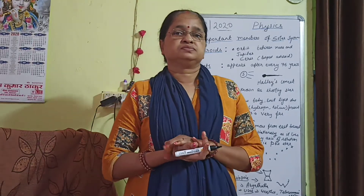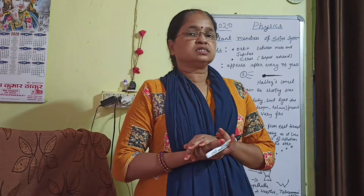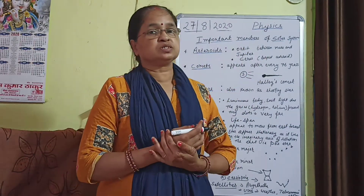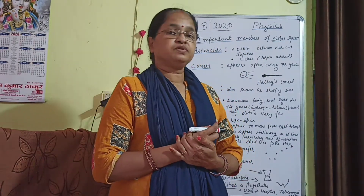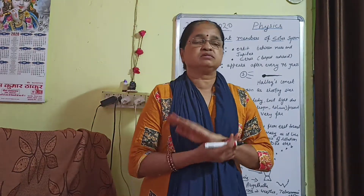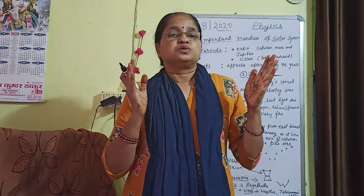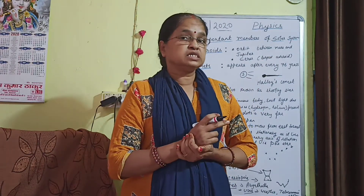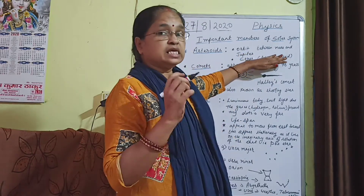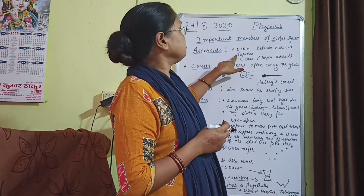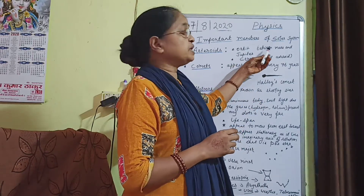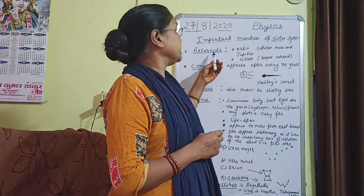Good morning students. Today let's start another topic: important members of the solar system. First, I am discussing asteroids. Asteroids are very big rocky bodies which revolve around the sun in an orbit between Mars and Jupiter. This orbit is known as the asteroid belt.